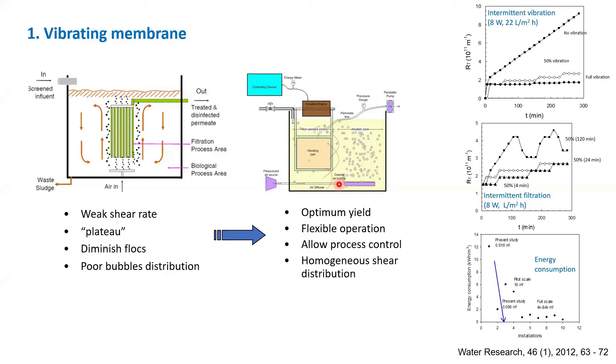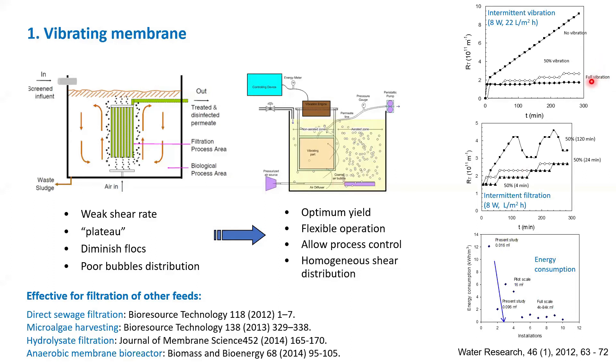We tested on membrane bioreactors, and we find out that the system is highly efficient. As you can see here, if you implement full vibration, you achieve almost no resistance. Basically, no pressure goes up here. If you compare to the no vibration, that continuously increases the resistance. It is highly efficient. The energy can be minimized if you operate it in the intermittent operation. We calculate the energy, and the energy consumption is actually very low. The system is also applicable for a lot of different feeds, as you can see from a list of publications we have here.